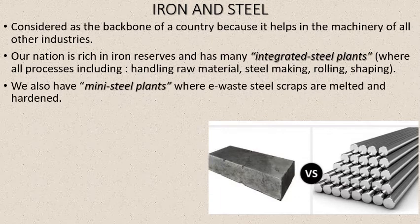There's a difference between integrated steel plants and mini steel plants. An integrated steel plant is where you take raw iron material — iron ore like hematite, magnetite, or limonite — remove the unwanted material like Fe2O3 or Fe3O4, take the iron from the rock, convert it into steel, roll it, shape it. That is what an integrated steel plant does.